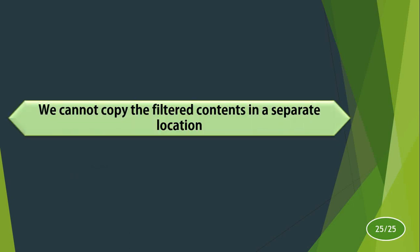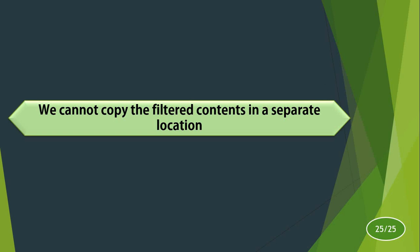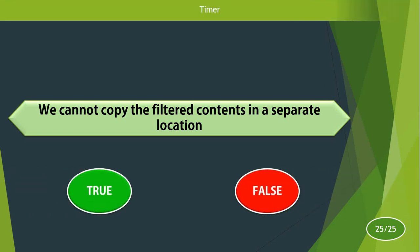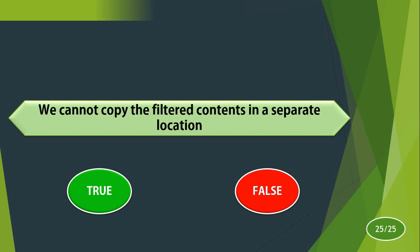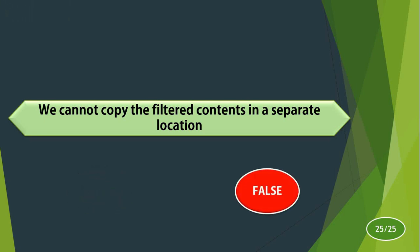We cannot copy the filtered content in a separate location. True or false? The answer is false. We can copy the filtered data into a separate location by using the Advanced Filter option. When using only Auto Filter, it will be filtered in place. Whereas when using Advanced Filter, the filtered contents can be copied into a new location. So the answer is false.